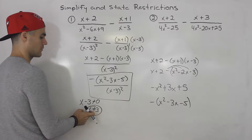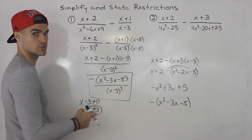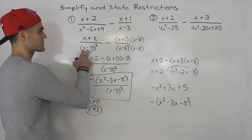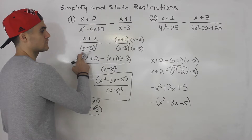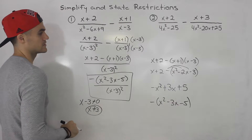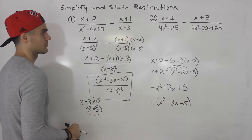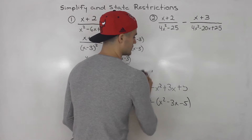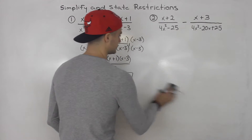We only have one restriction: x cannot equal 3, because that was the only factor in the denominator. Okay, moving on to number two — same steps.